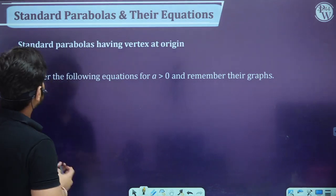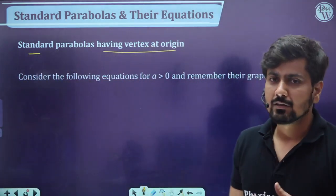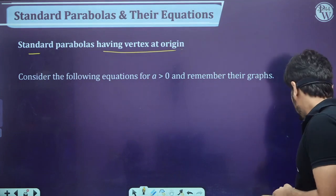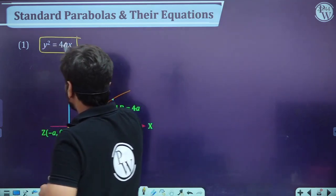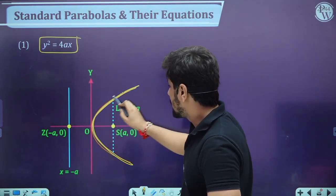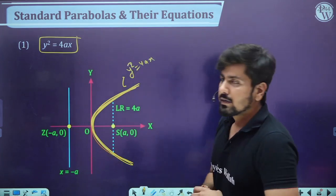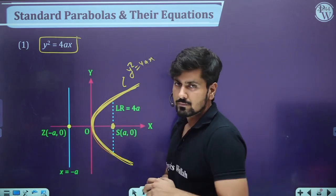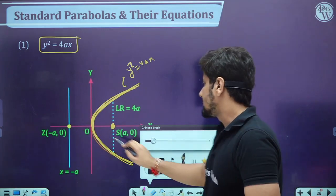We'll first learn about standard parabolas with vertex at the origin. The equation y² = 4ax represents a rightward parabola. Its focus is at (a, 0) and its directrix is x = −a. Its vertex is at the origin.